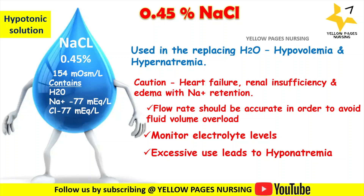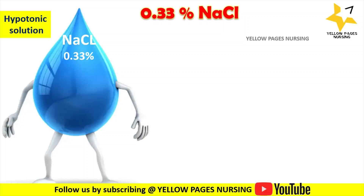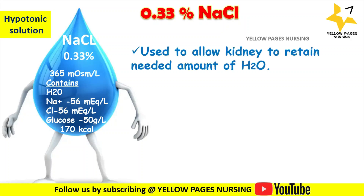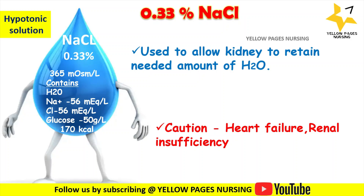The next example is 0.33% Sodium Chloride, also known as 5% Dextrose in 0.33% Sodium Chloride or one-third strength normal saline. Its osmolality is 365 milli-osmol per liter, containing water, sodium, and chloride at 56 mEq/L, glucose 50 grams per liter, and 170 kilocalories per liter. It allows the kidneys to retain needed amounts of water, and free water helps the kidneys eliminate solutes. It is typically administered with dextrose to increase tonicity, and used with caution in patients with heart failure and renal insufficiency.